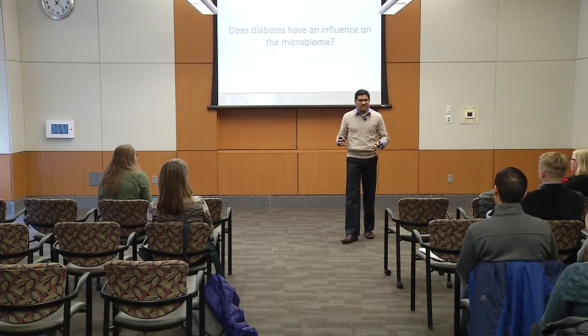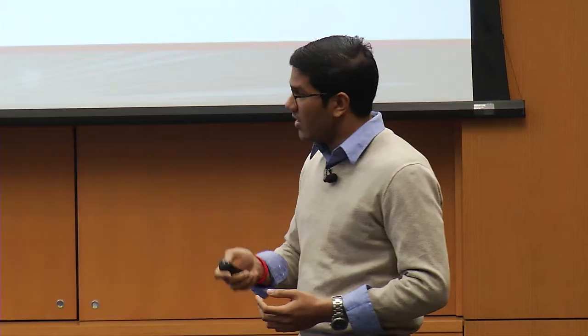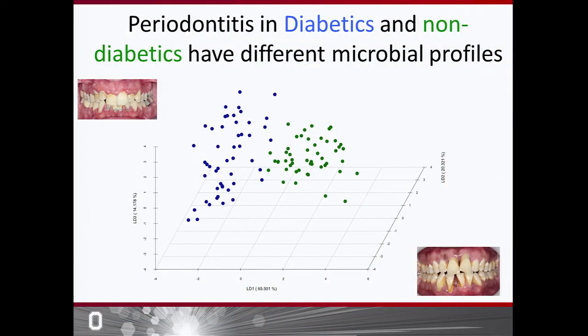So our first question was: does diabetes by itself have an influence on the oral ecosystem? What I'm showing here is on the top left a chronic periodontitis patient who presented in my practice, and on the bottom, a diabetes patient with chronic periodontitis — both with plaque, calculus, disease, and bleeding. The blue dots represent the diabetic population and the green dots a control population with no risk factors, but both groups do have periodontitis. You can see distinct clustering based on diabetes status in the two groups.